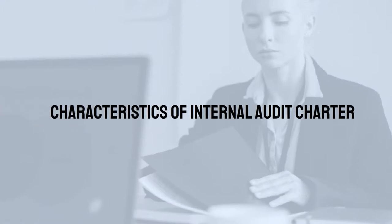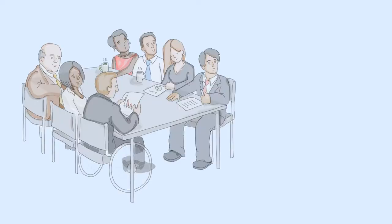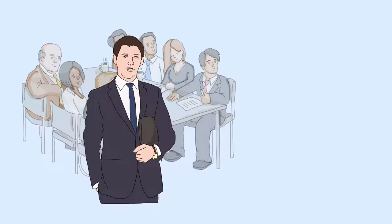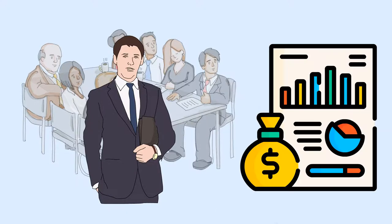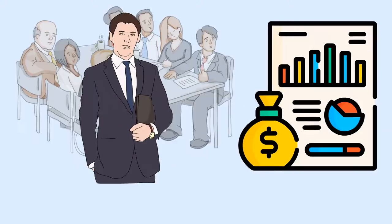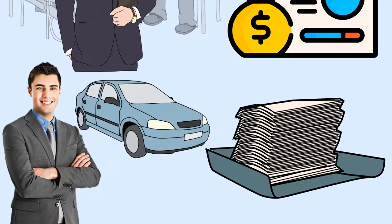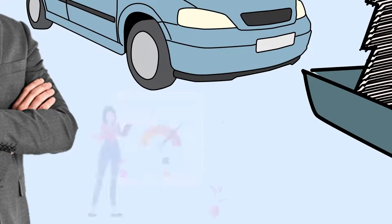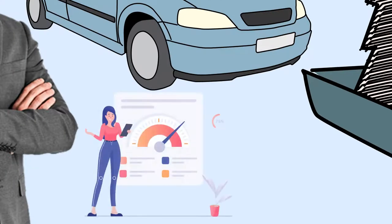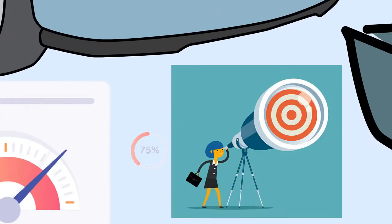Characteristics of the internal audit charter. The charter should establish the internal audit activity's position within the organization, including the nature of the chief audit executive's functional reporting relationship with the board. It authorizes access to records, personnel, and physical properties relevant to the performance of engagements, and defines the scope of internal audit activities.